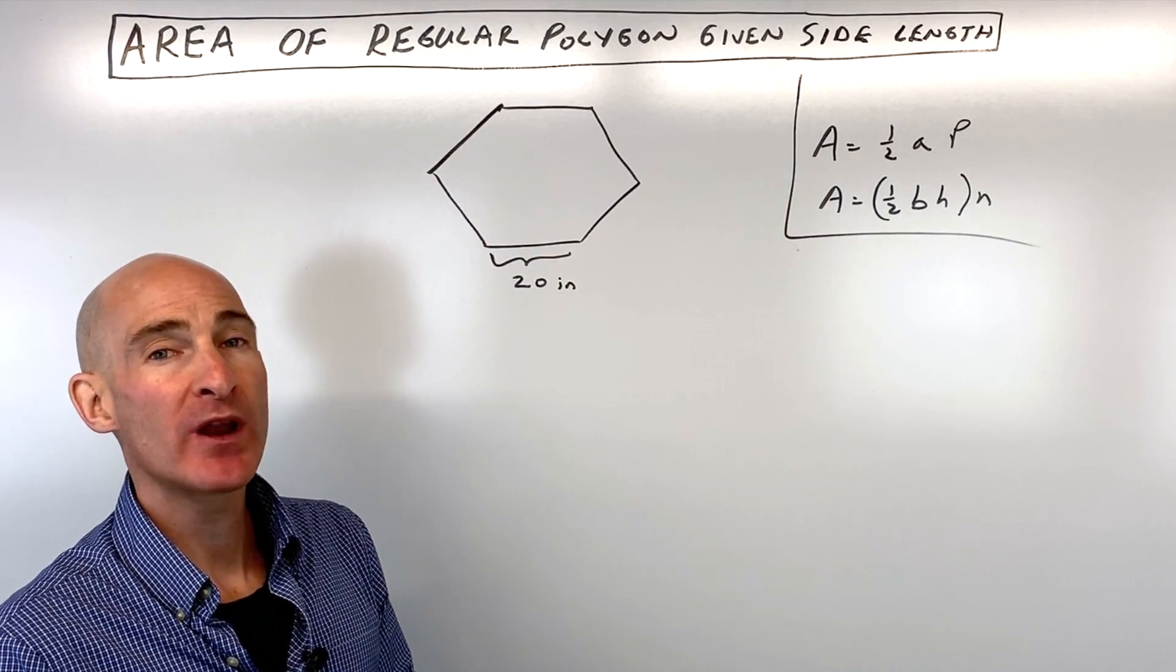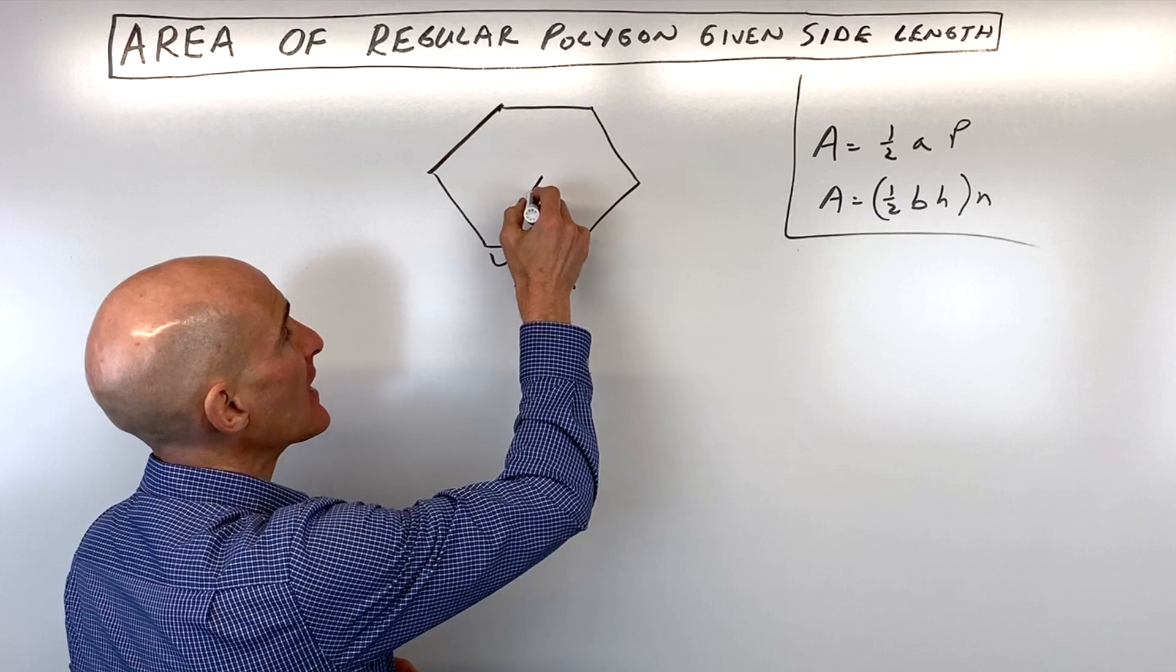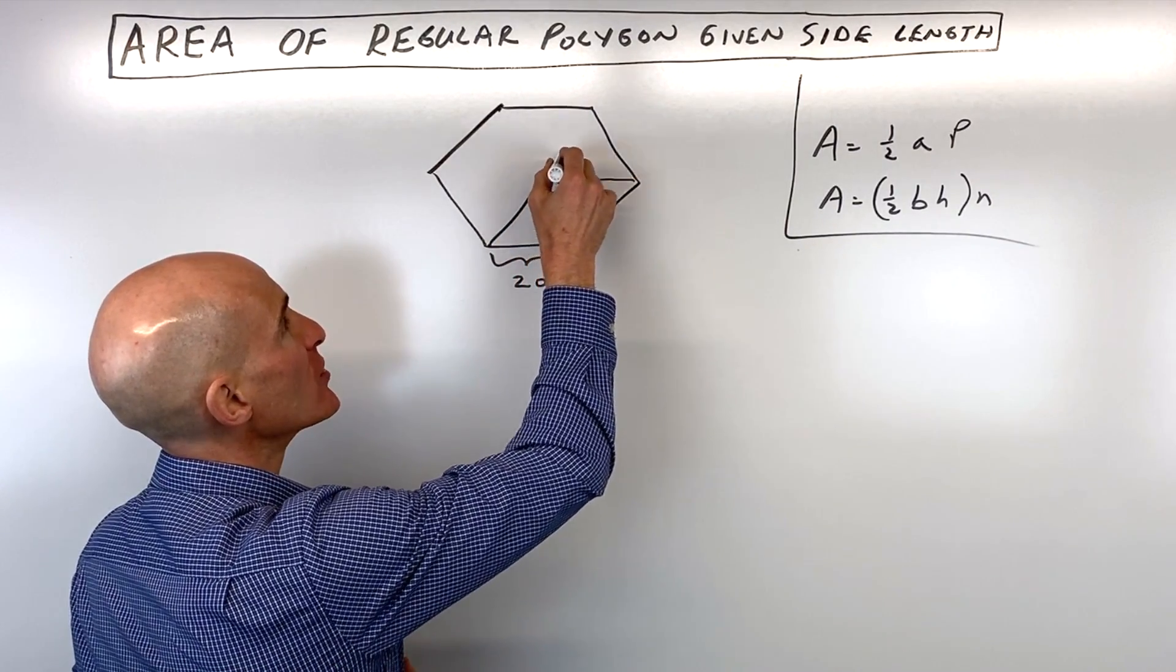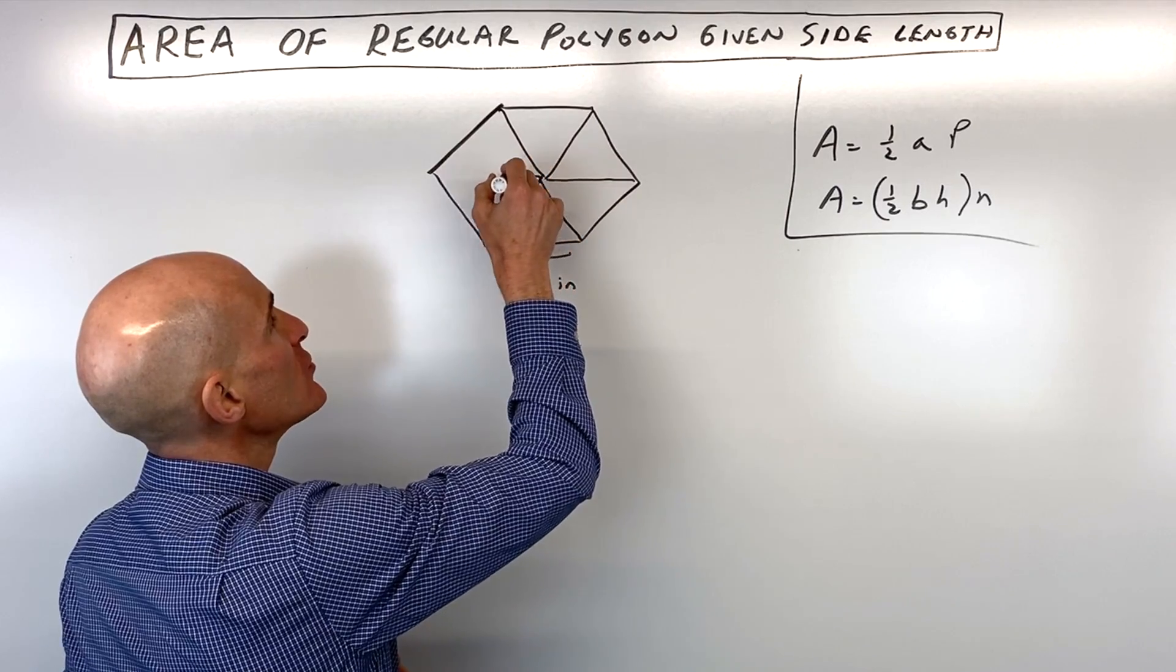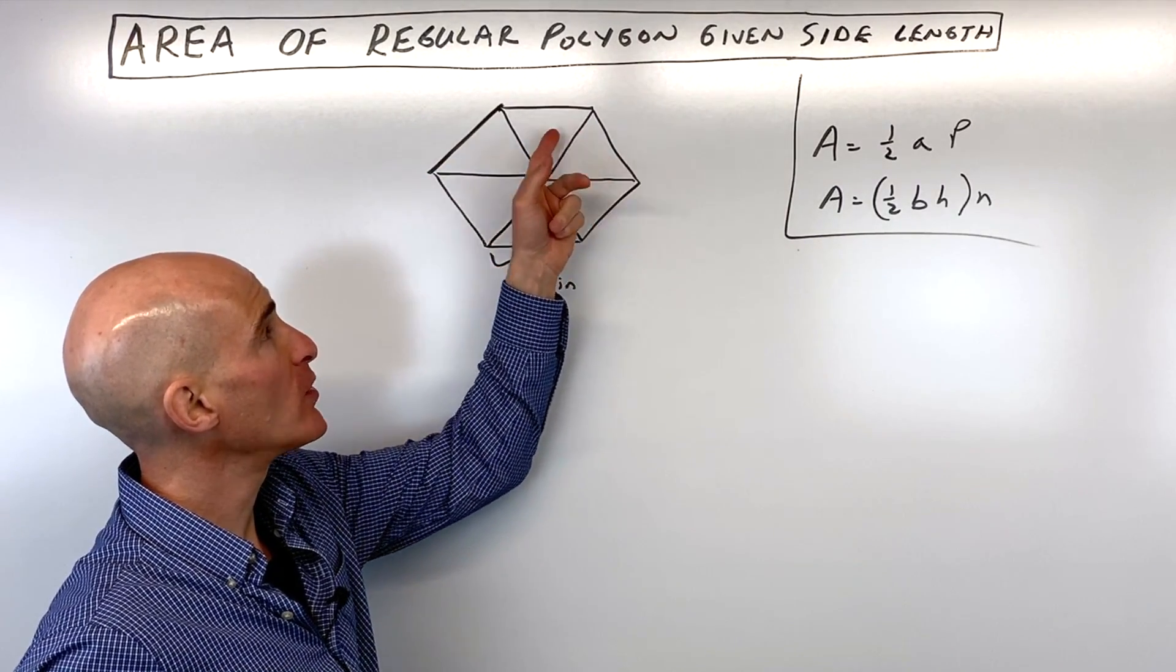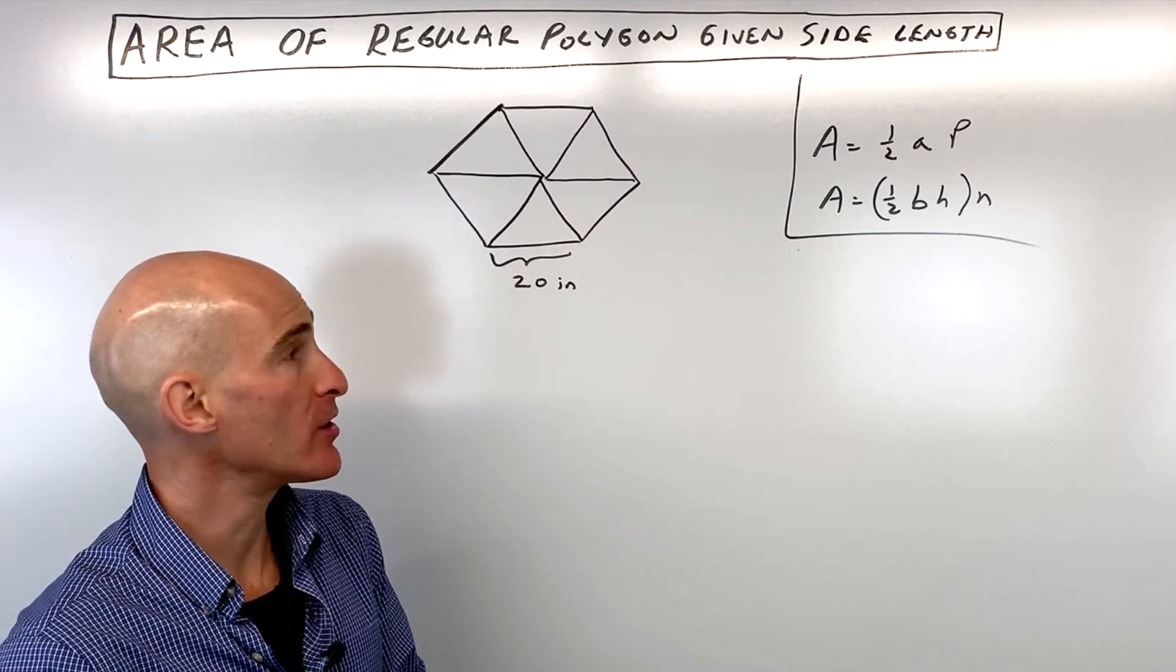The first step is to divide this regular hexagon into congruent triangles. So that's what we're going to do here first. Then we're going to focus on one of these triangles. If we can find the area of this triangle, we can multiply it by six, since there's six of them, to find the total area.